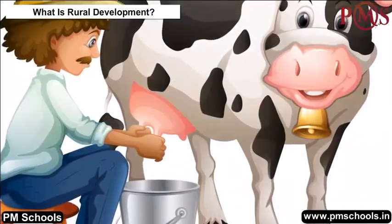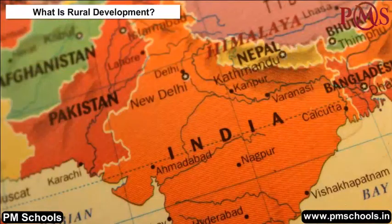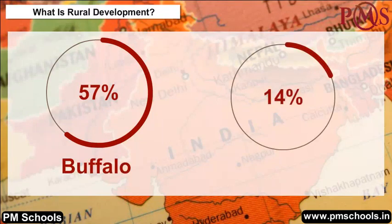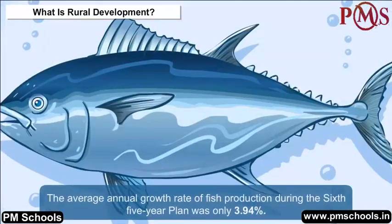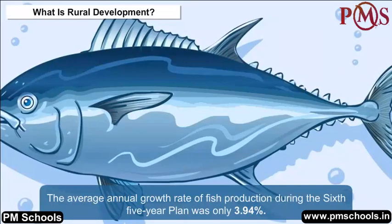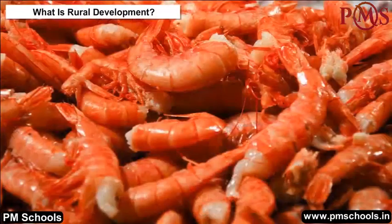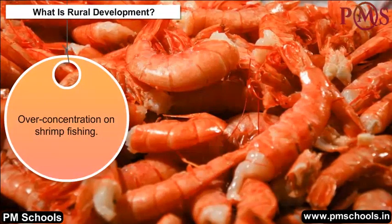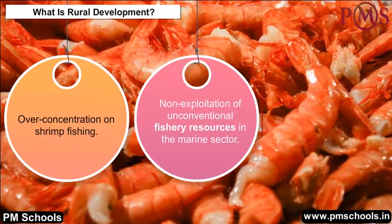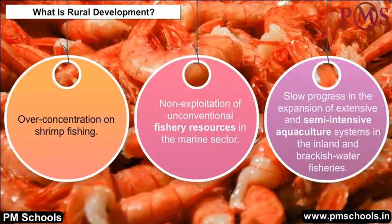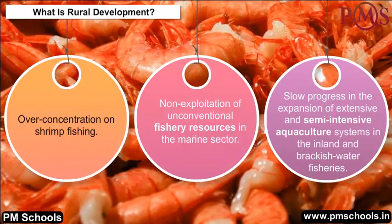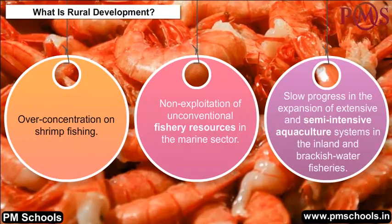Moreover, India is the highest producer of milk. The country accounts for 57% of the world's buffalo population and 14% of cattle population. The average annual growth rate of fish production during the sixth five-year plan was only 3.94%. The major constraints were over-concentration on shrimp fishing, non-exploitation of unconventional fishery resources in the marine sector, and slow progress in the expansion of extensive and semi-intensive aquaculture systems in inland and brackish water fisheries.